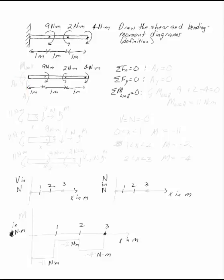Draw the shear and bending moment diagrams by definition of this three meter beam with three point moments on it: nine newton meters clockwise, two newton meters counter clockwise, and four newton meters clockwise.